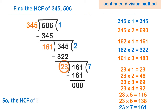The divisor of the last step is the HCF of 345 and 506. Some of you might be thinking: if we know the prime factorization method, why learn the long division method? If we use prime factorization to find the HCF of large numbers, we will get lots of prime factors and it will be very difficult. But if you use the continued division method, then you can find the HCF of large numbers very easily.